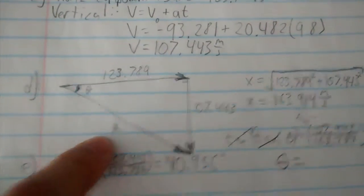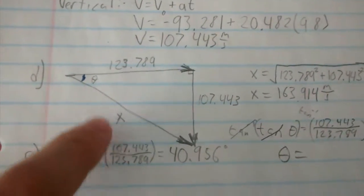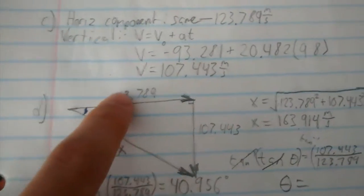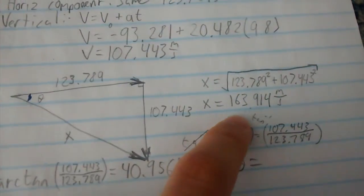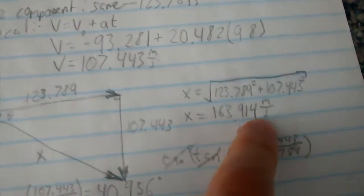So c, rearranging for c, solving for c - well in this case x - x equals square root of a squared plus b squared. And that's exactly what I did here, and I got a value of 163.914 meters per second.